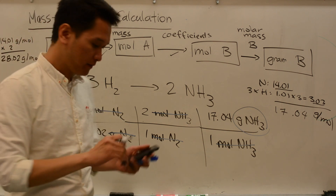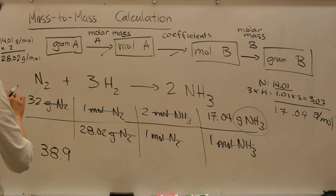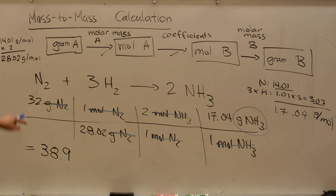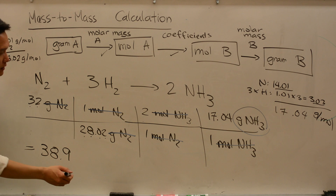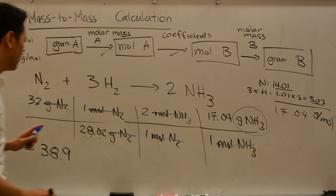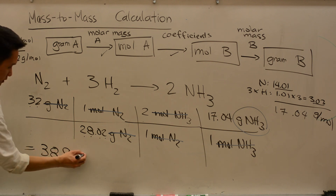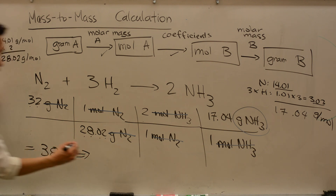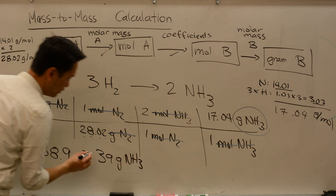Let's double-check: 32 times 2 times 17.04 divided by 28.02 — yes. There are only two sig figs in 32, so the answer rounds to two sig figs. This becomes 39 grams of ammonia.